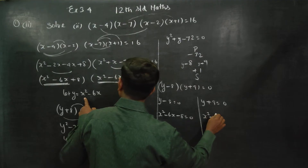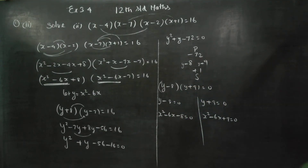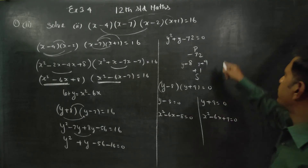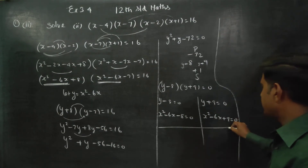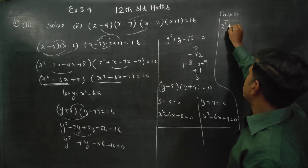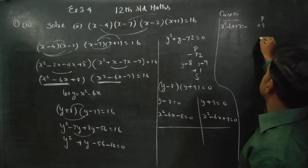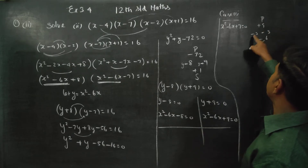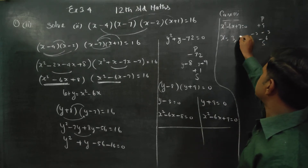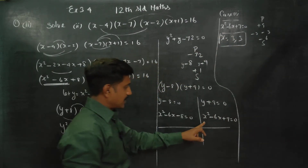x squared minus 6x plus 9 is equal to 0. In this sum, 2 factors — I am going to start my two cases, Case 1 and Case 2. Case 1: x squared minus 6x plus 9 is equal to 0. Product sum: plus 9, minus 6; minus 3 times minus 3 multiply gives plus 9, add gives minus 6. x is equal to plus 3, 3. First answer ready.